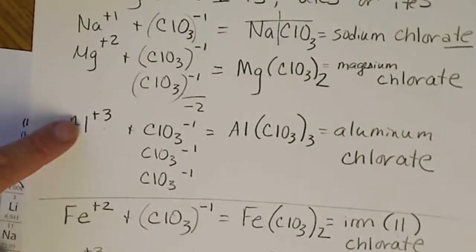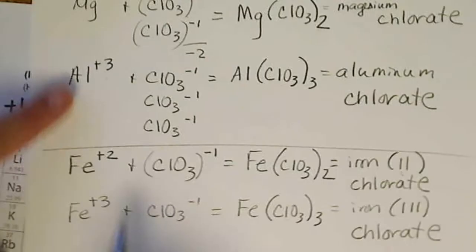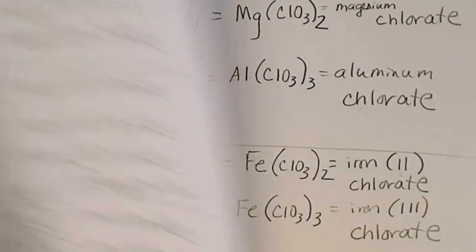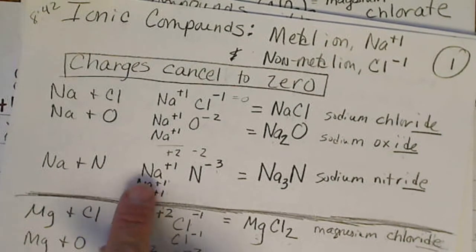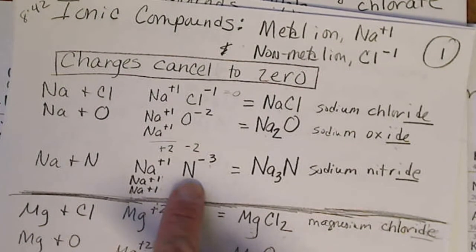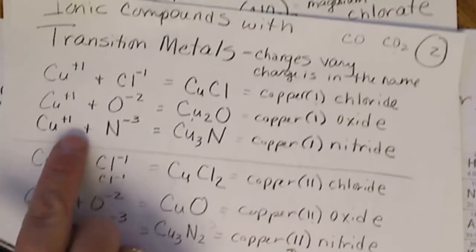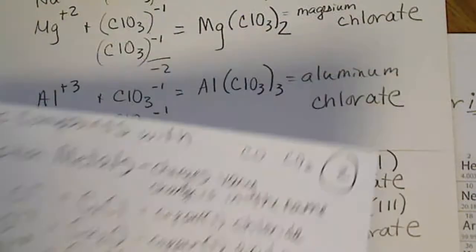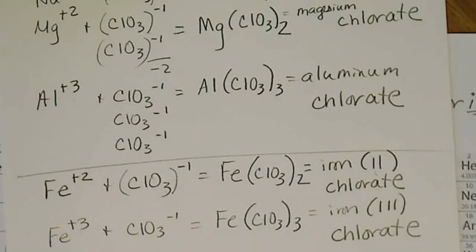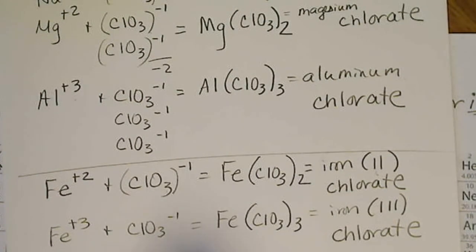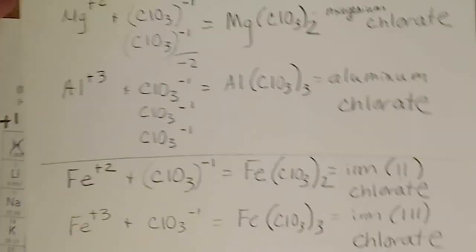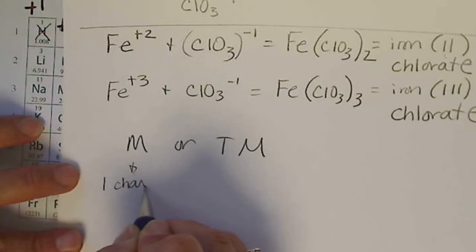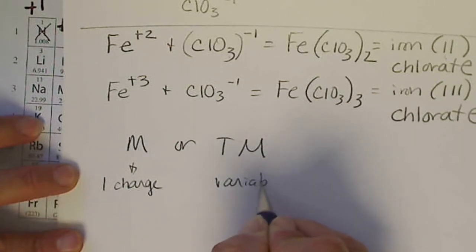So we can have a simple metal with a polyatomic ion or a transition metal with a polyatomic ion. Just like we can have a simple metal with just a symbol on the periodic table, or we can have a transition metal with just a symbol on the periodic table. So we basically have four possible scenarios there, and I'm going to summarize those on the next slide. We can have a metal or a transition metal. So the metal is one charge only. The transition metal is a variable charge.